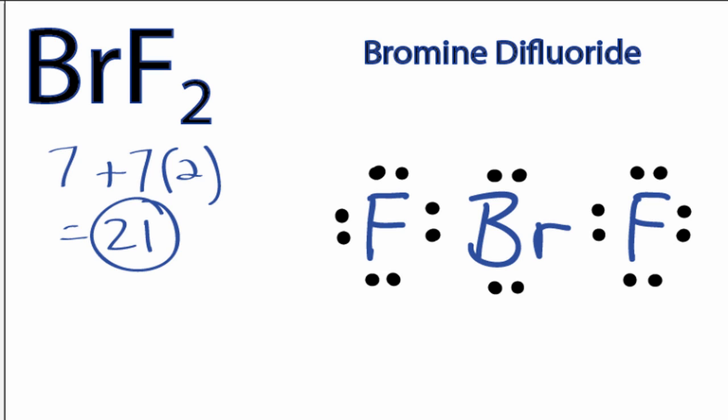Bromine is in period 3 on the periodic table. That means it can hold more than 8 valence electrons. So we have 1 valence electron left and we're just going to put it right here on the bromine.